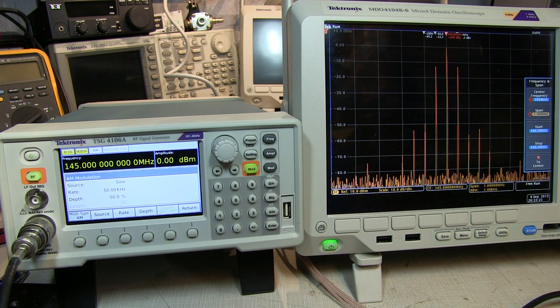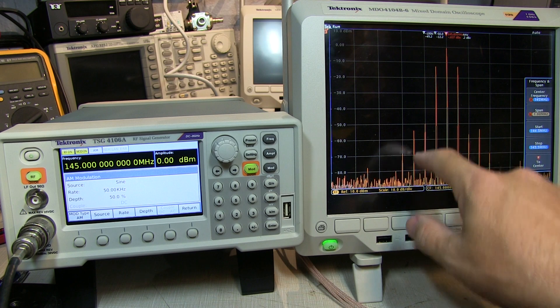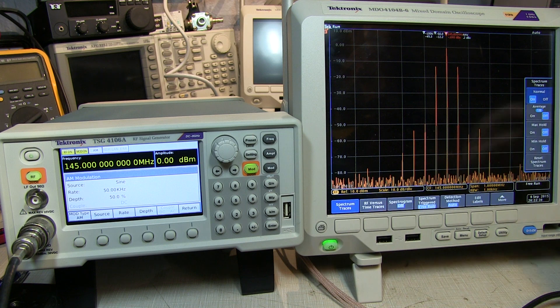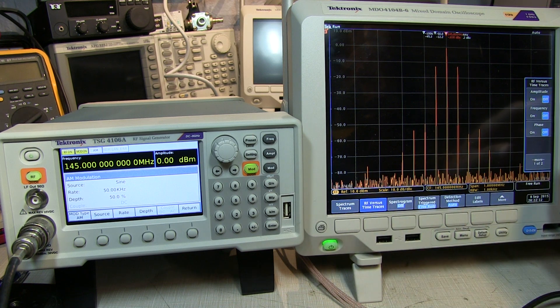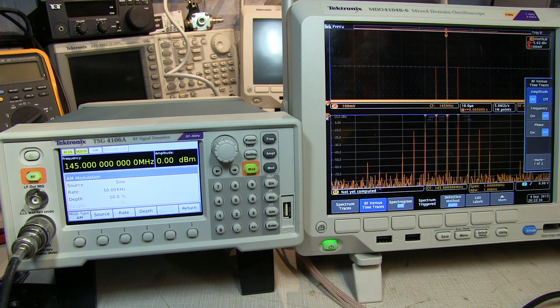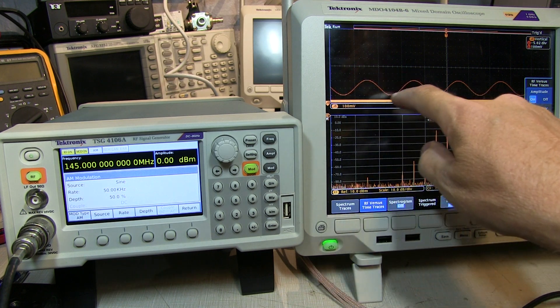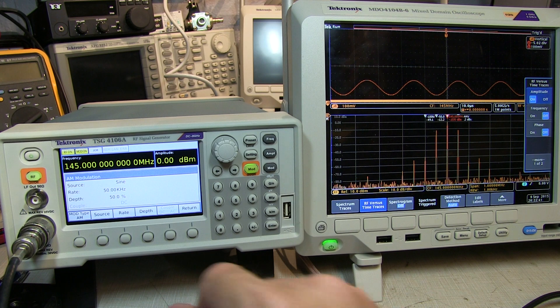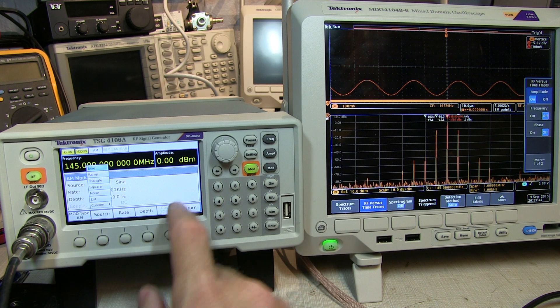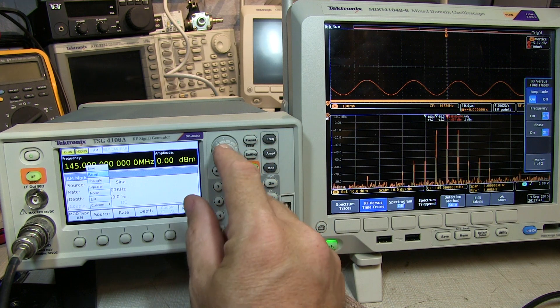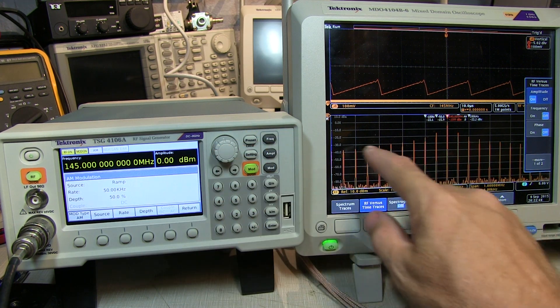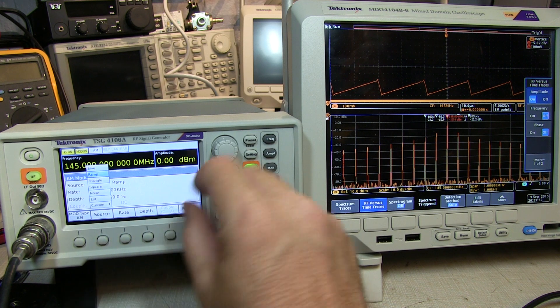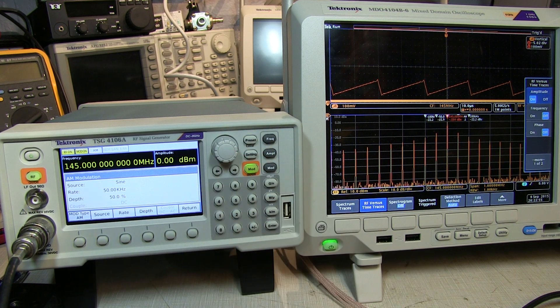Now with the MDO here, we can actually look at the amplitude versus time variation of that RF signal. So if we go and select RF versus time traces, turn on the amplitude versus time trace, and we can actually see there's our sinusoidal amplitude variation that we set up on the signal generator. If we change our source to, say, a ramp, let's turn that on. Let's see the spectrum changed here. And there's our modulation shape. Let's bring that back to, say, a sinusoid, turn that back on again.